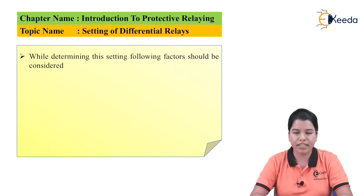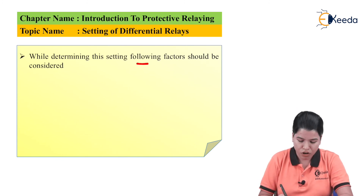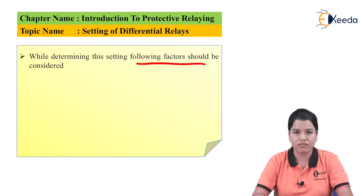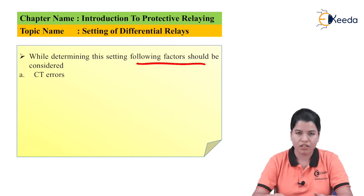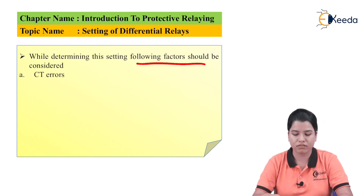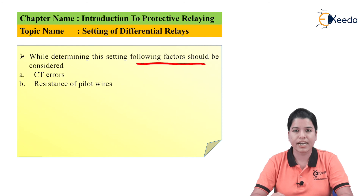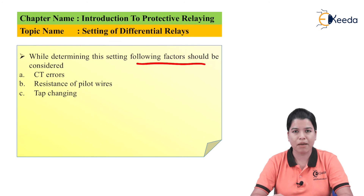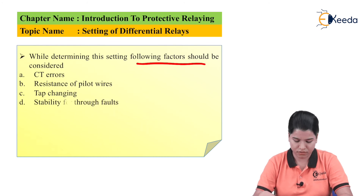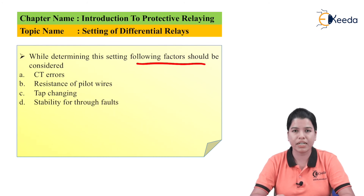While determining this setting, the following factors should be considered: first is CT error; second is resistance of pilot wires; third is tap changing; fourth is stability for through faults.